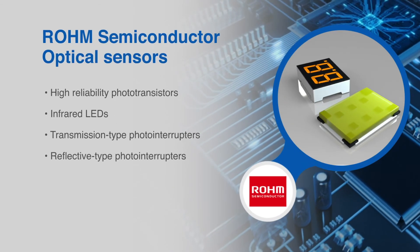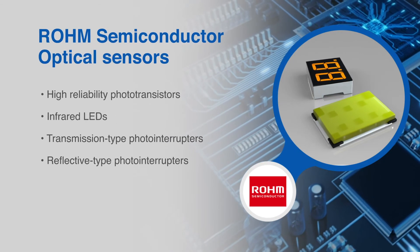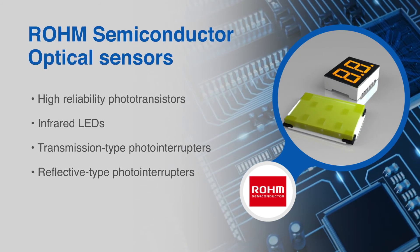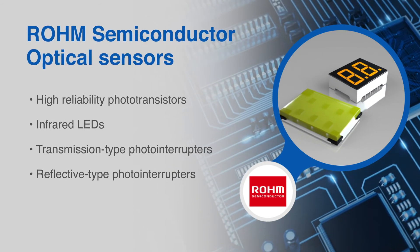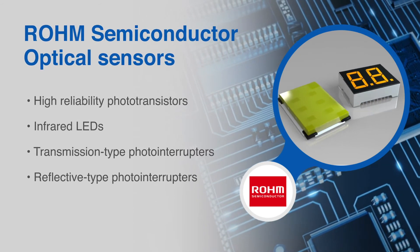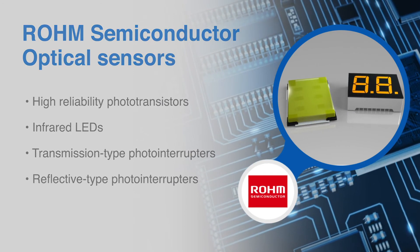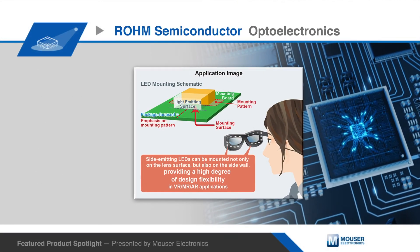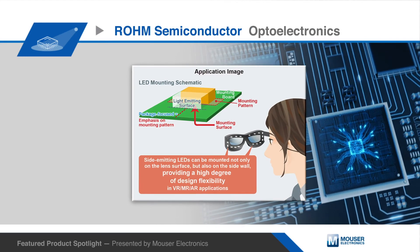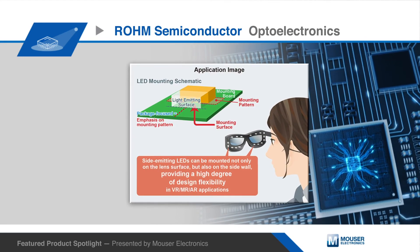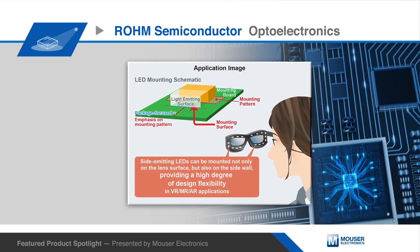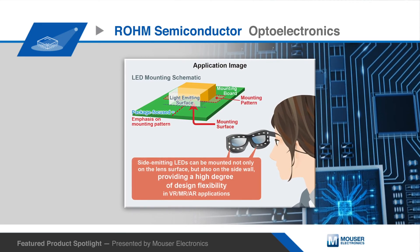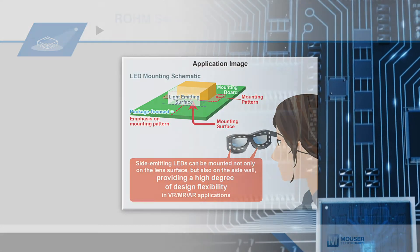Roam Semiconductor optical sensors include high sensitivity and high reliability photo transistors, infrared light emitting diodes, transmission type photo interrupters, and reflective type photo interrupters. Devices such as the ultra compact CSL-1501RW 860 nanometer infrared LED are ideal for head mounted displays, industrial headsets, and VR, MR, and AR gaming systems.